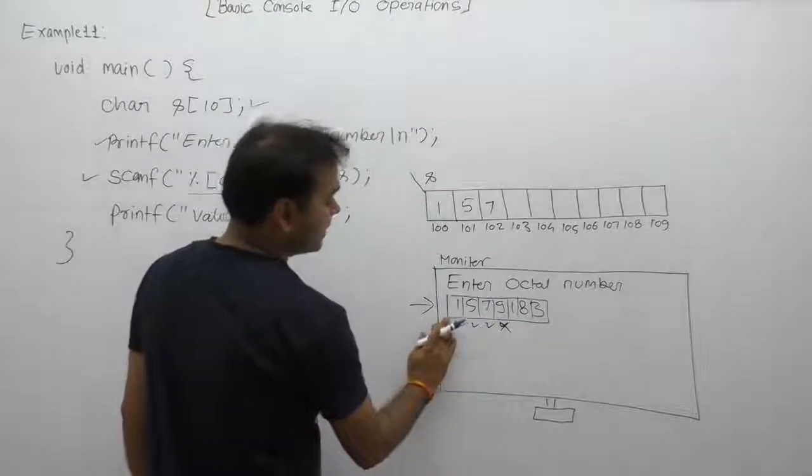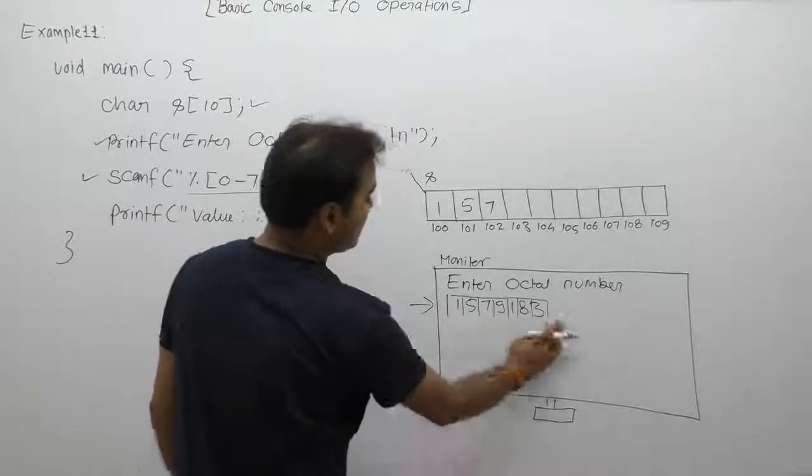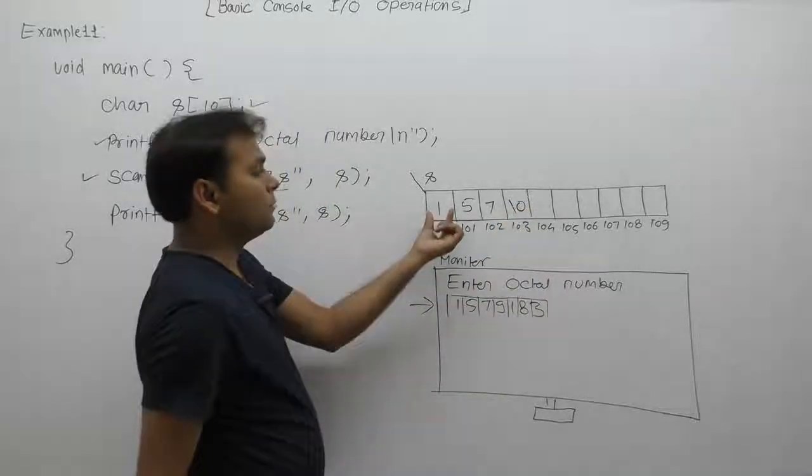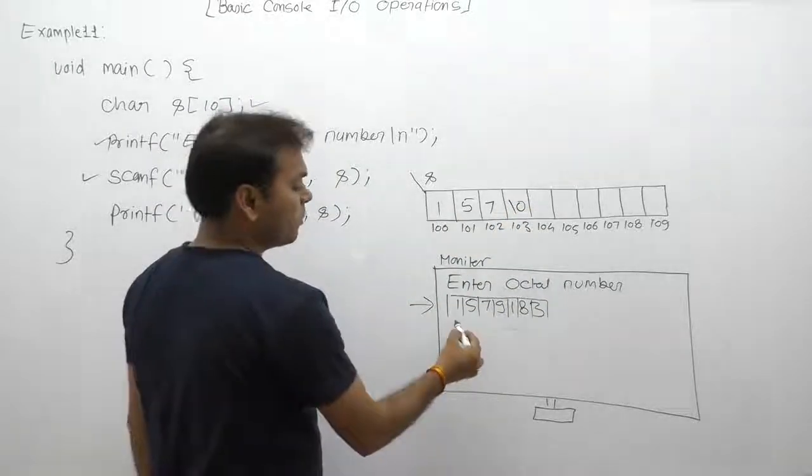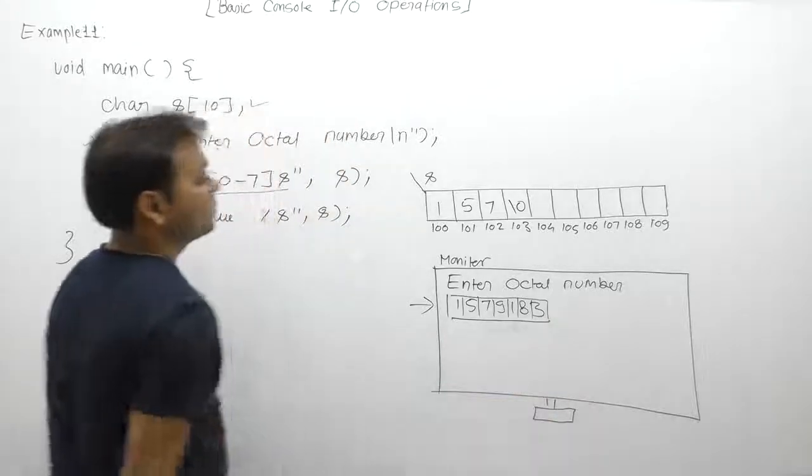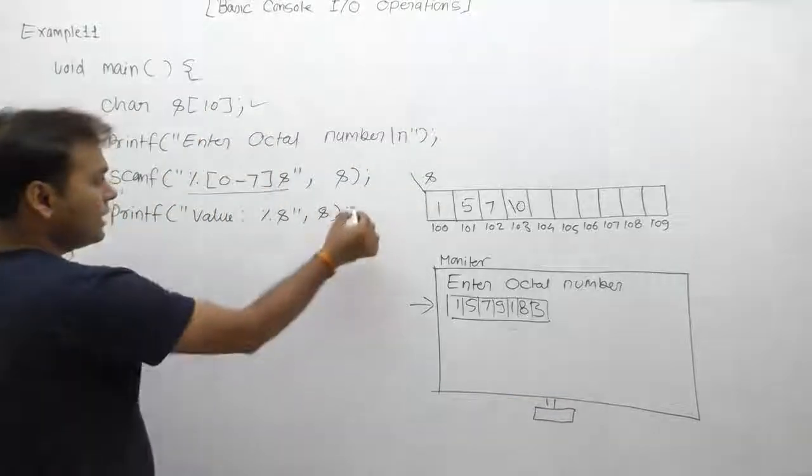Therefore it will stop reading the symbol from the buffer. After that, only 157 will be assigned out of the given numbers or given digits.